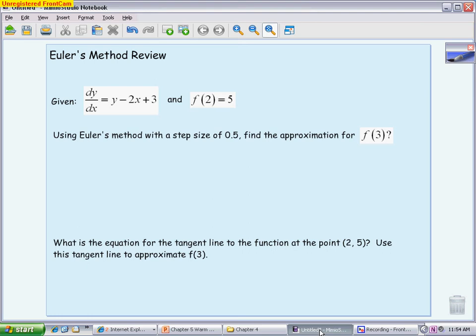So the way we start this is we always start at our y value. So our y value is 5. And then we're going to add our step size times what we get when we put our point into the slope. So that's what the differential equation does for us. It gives us a slope at that particular value. So I'm going to plug 2 in for x, 5 in for y, using my x and y to get my slope. So when I put that in, it's going to be 5.